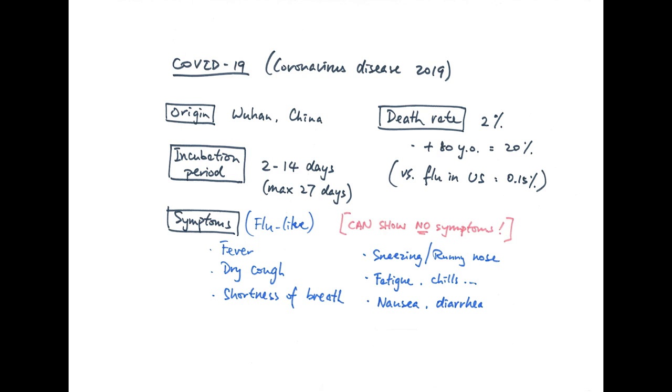Based on the current statistics, the death rate is around 2 to 3 percent. However, it is likely to increase in the next few days. The death rate is even higher at around 15 to 20 percent for anyone above the age of 80. Compared to the death rate of flu in the states, which is about 0.15 percent, you can really see the seriousness of COVID-19.